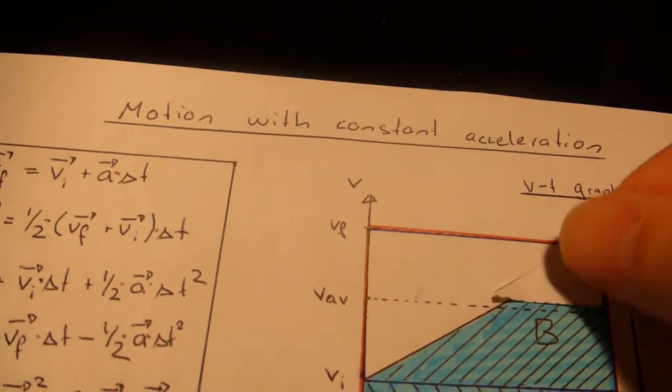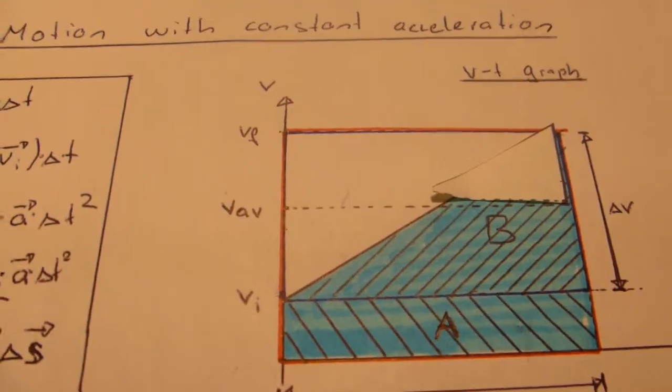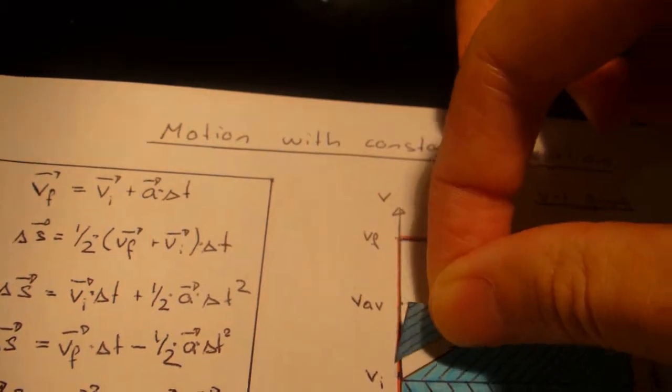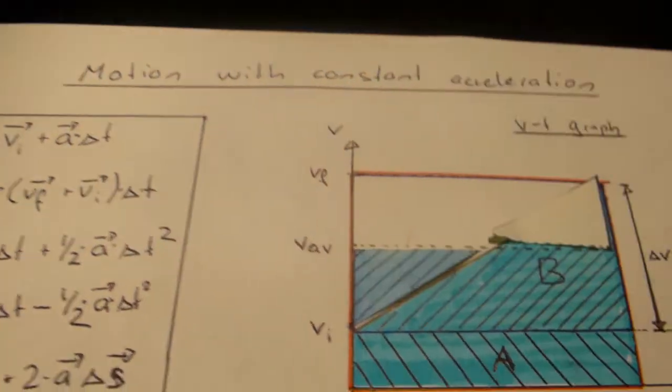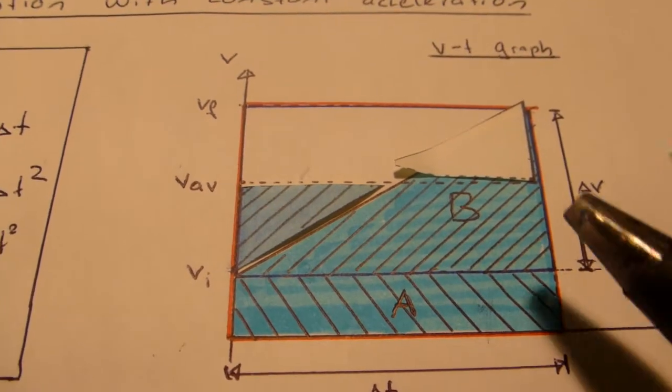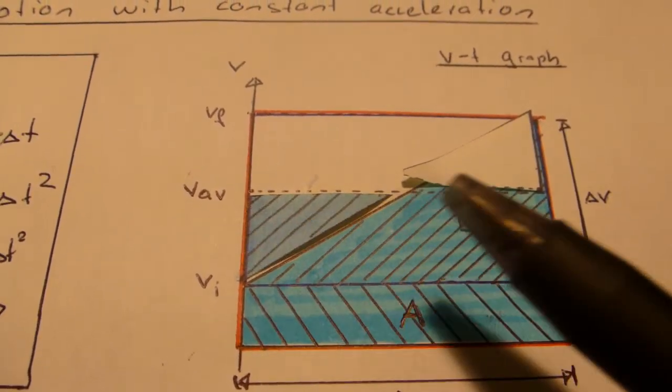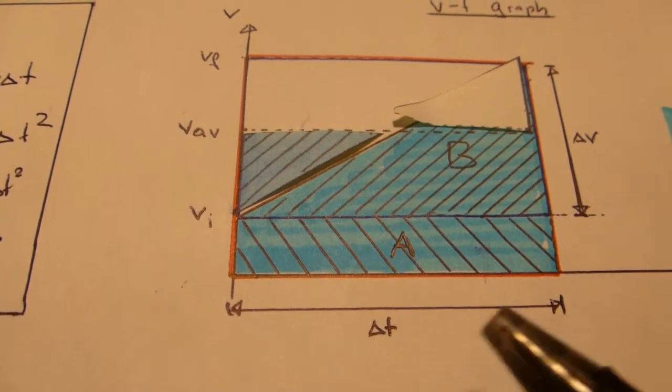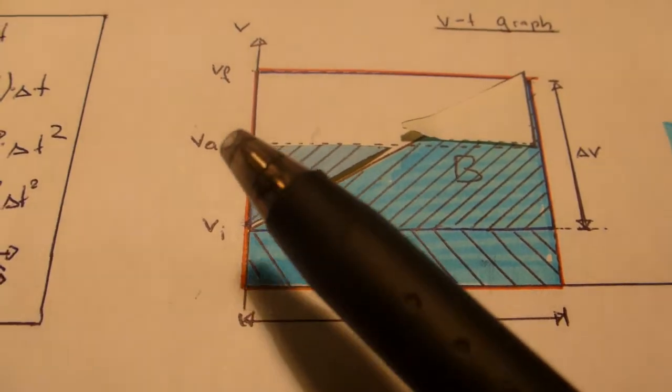Take off this little triangle up here and put it right there. And we see that what before was an irregular shape is now just a rectangle with one side delta t and the other side V average.